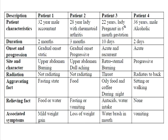Both are ulcer pains. The first is a duodenal ulcer, where food improves the pain because neutralization of acid in the stomach reduces acid contact with the duodenal ulcer. The second is a gastric ulcer, which is aggravated by acid in the stomach — so the first patient has a duodenal ulcer and the second has a gastric ulcer.